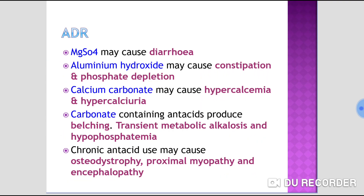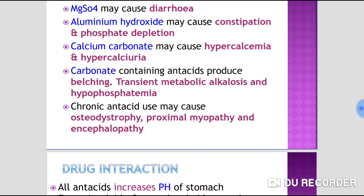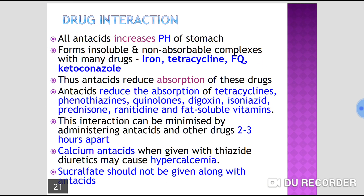Magnesium salts may cause diarrhea. Aluminium hydroxide may cause constipation and phosphate depletion. Calcium carbonate may cause hypercalcemia and hypercalciuria. Carbonate-containing antacids like sodium bicarbonate may produce belching, eructation, and abdominal distension, as well as transient metabolic alkalosis and hypophosphatemia. Chronic antacid use may cause osteodystrophy, osteomalacia, proximal myopathy, and sometimes encephalopathy.